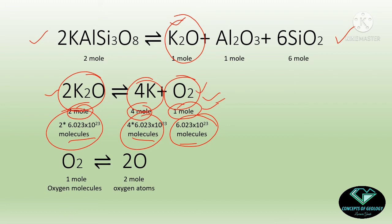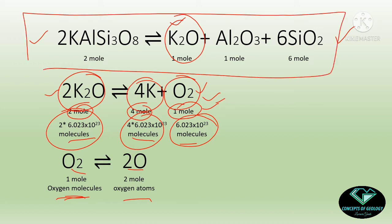If we break down O2 further, we get 2 moles of oxygen atoms. So 1 mole of oxygen molecules breaks down into 2 moles of oxygen atoms. That is 6.023 × 10²³ oxygen molecules giving 2 × 6.023 × 10²³ oxygen atoms. Think about how many atoms are involved in this entire reaction — if converted to number of atoms, a huge number are involved in this chemical reaction.